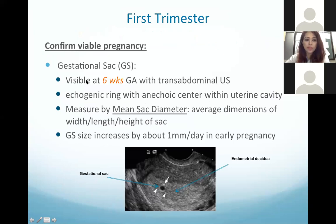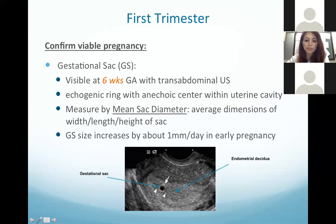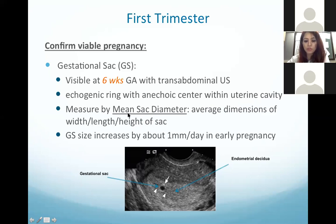In the first trimester we first confirm viable pregnancy. The gestational sac is visible at six weeks of gestational amenorrhea on transabdominal ultrasound — it appears as an echogenic white ring with an anechoic black center within the endometrium. We measure the mean sac diameter by taking measurements in three dimensions — AP, transverse, and longitudinal — and calculating the mean. The gestational sac increases approximately 1 mm per day in early pregnancy.